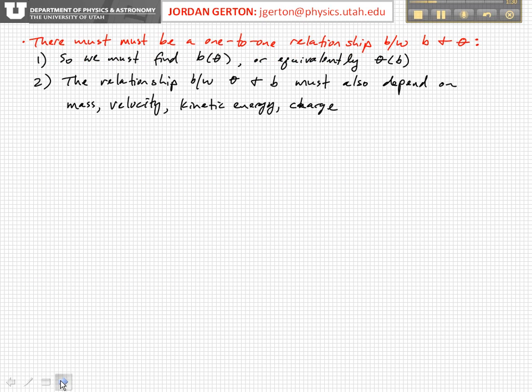What we're going to do is do this in two parts. We're first going to derive an expression for B of theta for a single particle, and then we're going to see how this relates to a beam of particles. Because obviously, in a beam, any given alpha particle can have a different value of B, a different impact parameter for a particular scattering center. So we'll first solve this generically for one particle, and then we'll see what happens when you have a beam of particles.